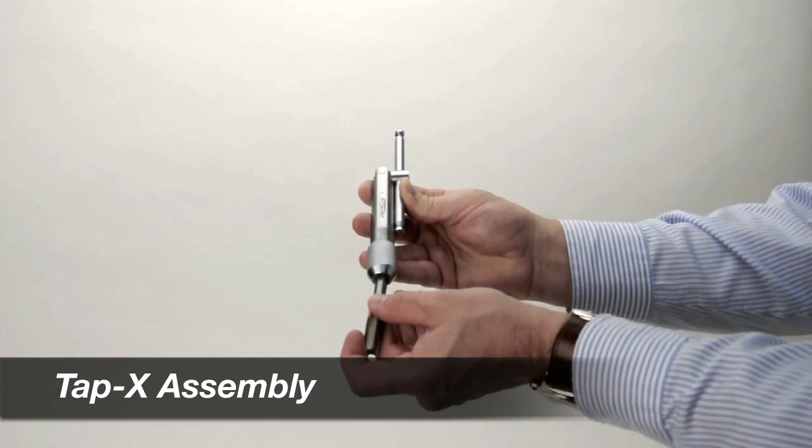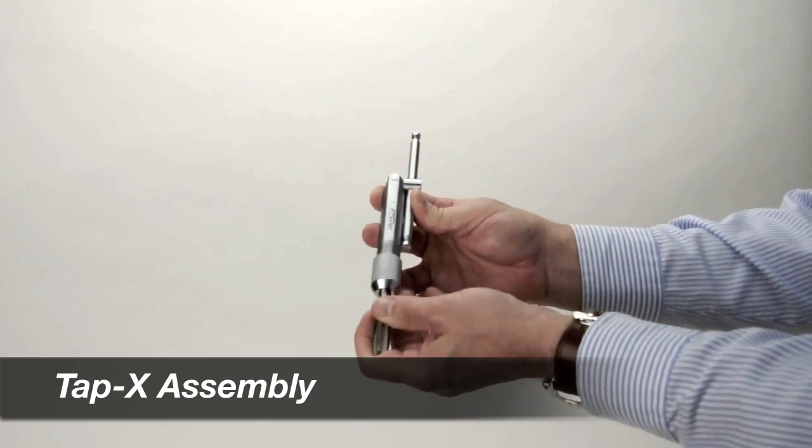Insert the desired tap into the collet opening, and while holding the tap, tighten the knurled sleeve a few turns more.